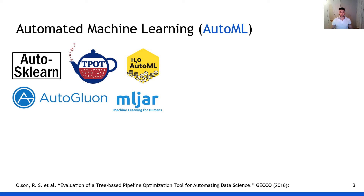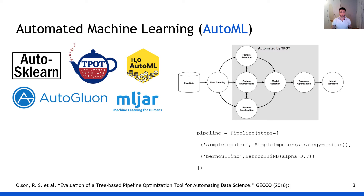First, we define what AutoML tackles. For the task of building well-performing machine learning systems, practitioners need to identify relevant algorithms, choose key hyperparameters, and then tune these values for each dataset. As such, automated machine learning systems have emerged which generate, validate, and then rank those pipelines within a given execution time budget. We focused our evaluation on TPOT, which generates tree-shaped pipelines using a genetic programming-based search. A pipeline can be thought of as a combination of zero or more data preparation algorithms, followed by a final estimator.